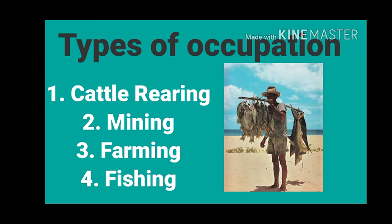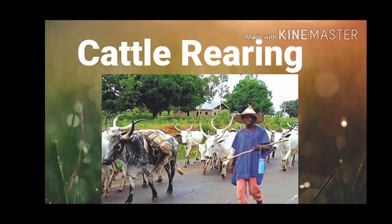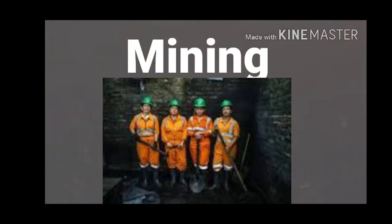So first, we are going to start with cattle rearing. You remember the story I told you earlier about Musa, a young boy who lives in southern Kaduna. Cattle rearing is more common in the Guinea savannah — that is, in the dry lands. The Fulani people are cattle rearers. They have plenty of grass in this area.